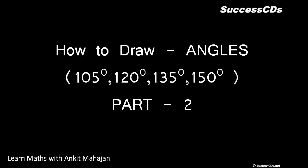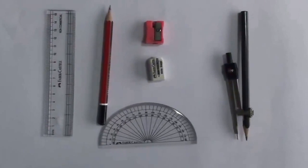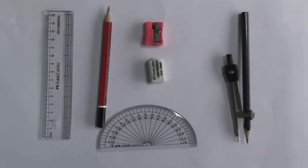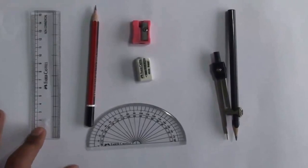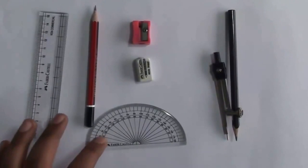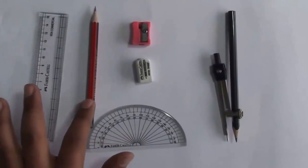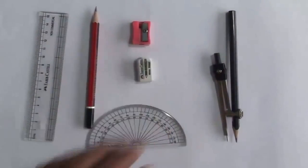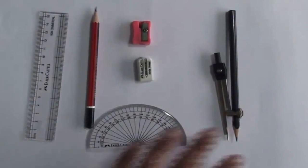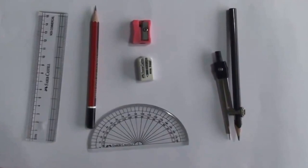So let's start and discuss them. First, what do we need to make constructions? We need a scale, a protractor to measure angles, a very well sharpened pencil, a good rubber, a sharpener, and of course a compass to make angles.